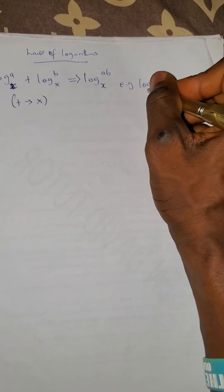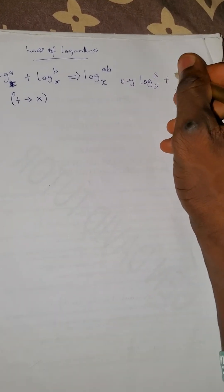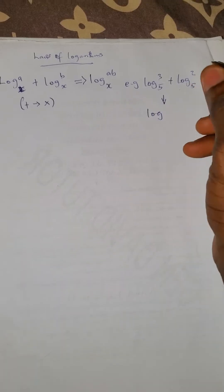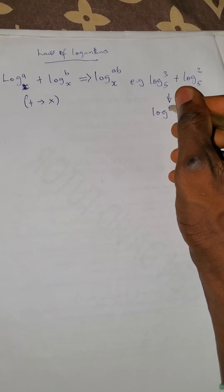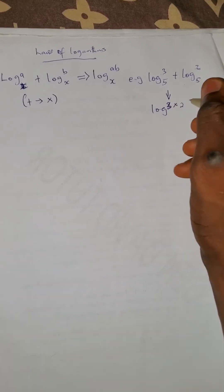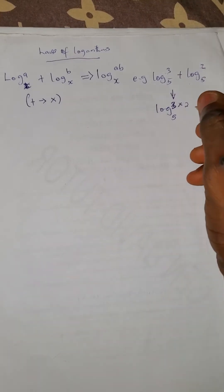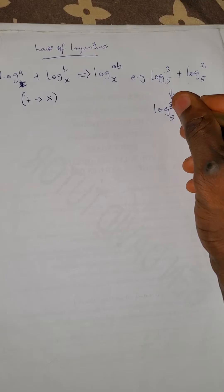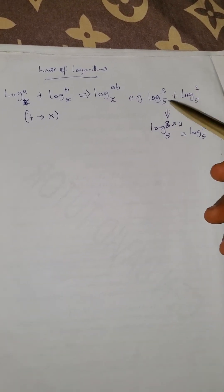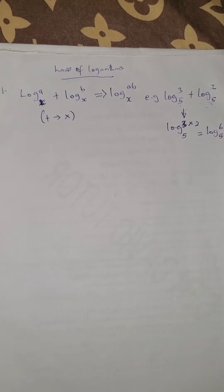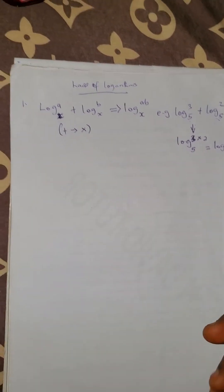For example, if you have log 3 base 5 plus log 2 base 5, then this becomes log of 3 times 2, which is 6, base 5. Since they are the same base, you just pick one base and multiply: 3 times 2 is 6 base 5.